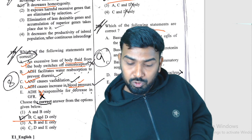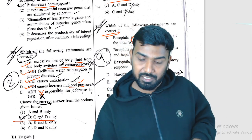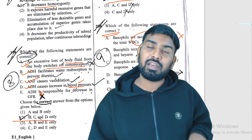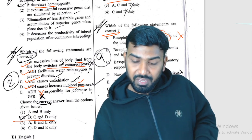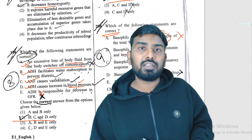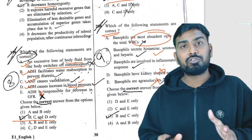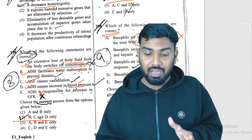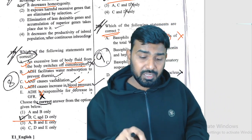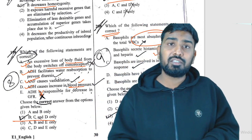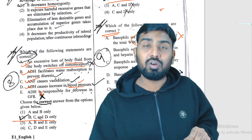Question 200: correct statement about basophils. Basophils are the most abundant — wrong; they are the least abundant. Basophils secrete histamine, serotonin, and heparin — correct. Basophils have kidney-shaped nucleus — wrong, that is monocytes. Basophils are agranulocytes — wrong; they are granulocytes (along with acidophils and neutrophils). So the correct answer is that basophils secrete histamine, serotonin, and heparin.